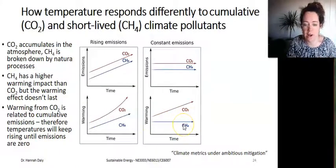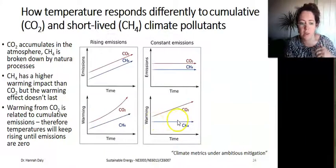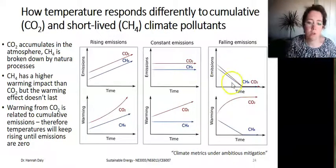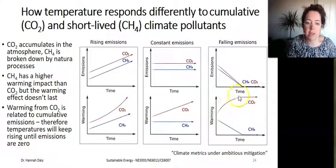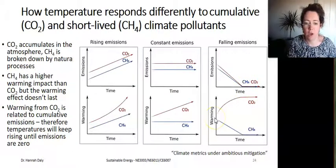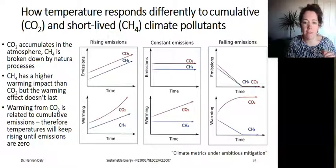Let's say methane has already caused one and a half degrees of increase in global temperature. If emissions stay constant, the global temperature effect from methane won't increase further. And where it really makes a difference is when talking about falling emissions. If we bring global CO2 emissions to zero, the warming from CO2 will continue to rise until it actually reaches zero. Whereas the opposite is true for methane: if we reduce our methane emissions, the warming impact will actually decrease, meaning we can reverse our historical warming as a result of CH4. That's why the warming effect is very sensitive to the trend in methane emissions, but not so much for CO2.